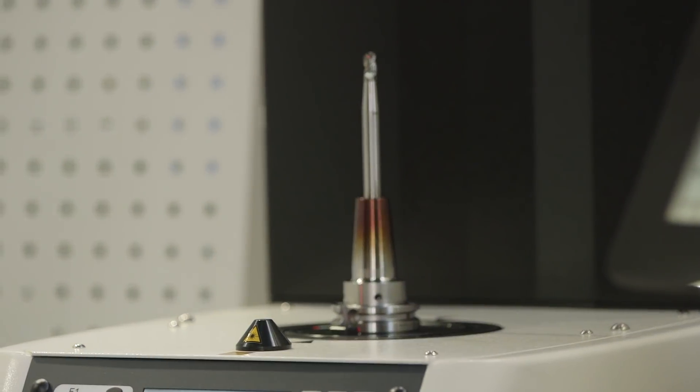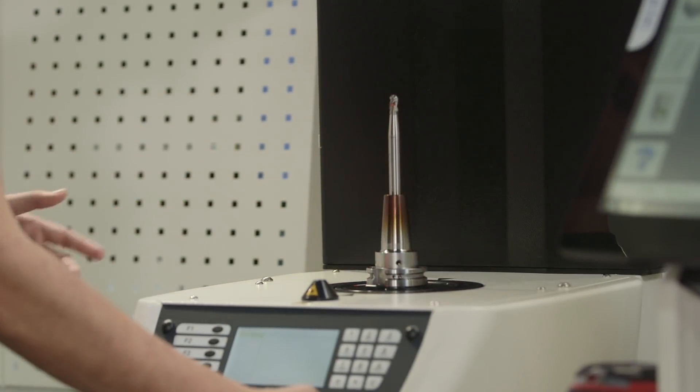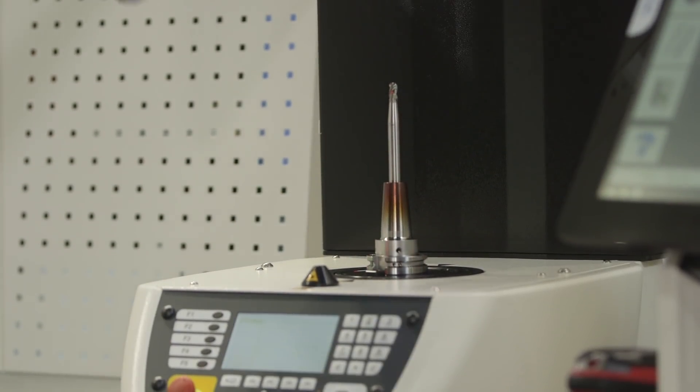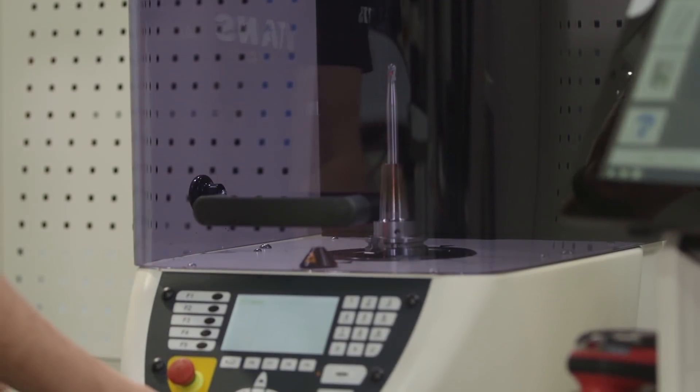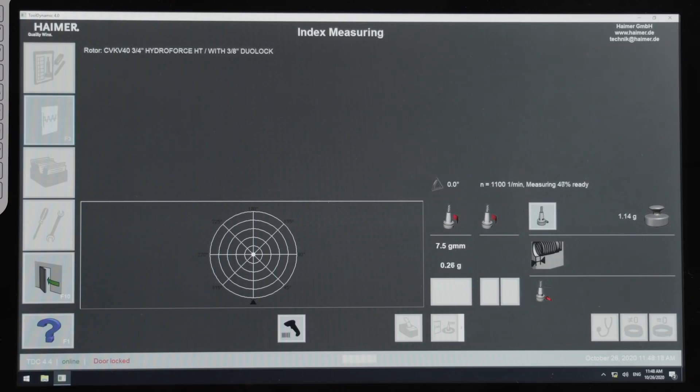This machine is easy to use. With simply one button we can turn it around and unclamp it, re-clamp it again, and hit cycle start. Just like that, it will go through and populate and do all the math that it needs and give us exactly where we need to add our weight.